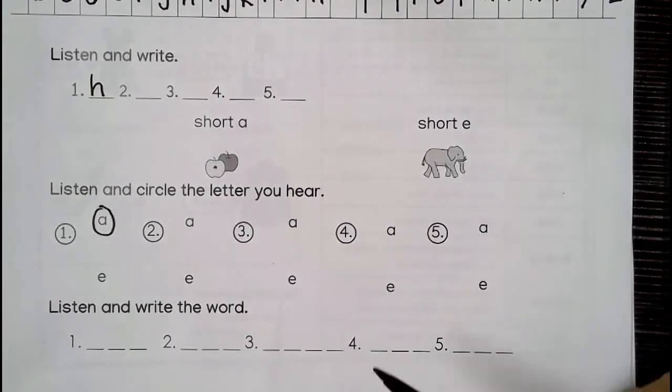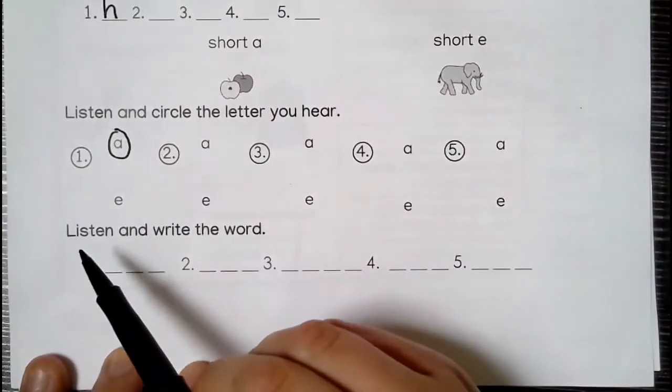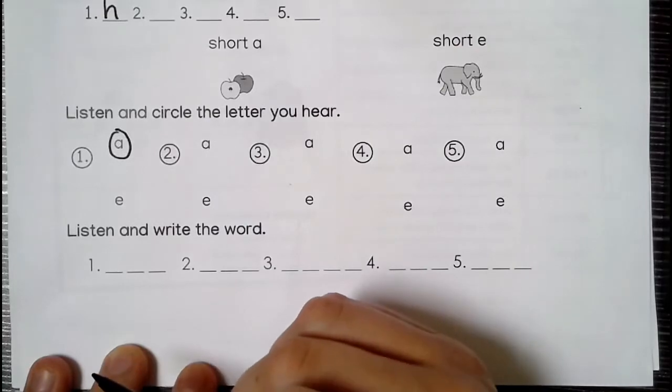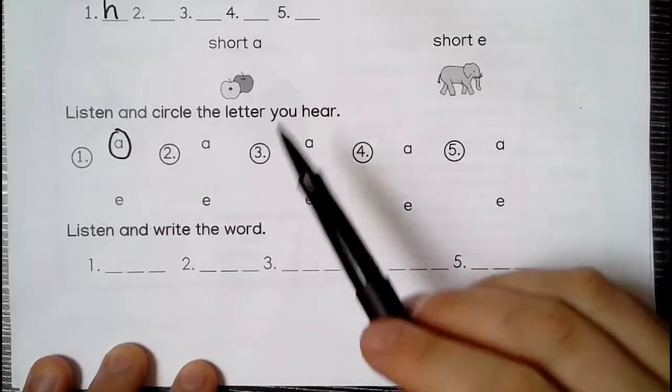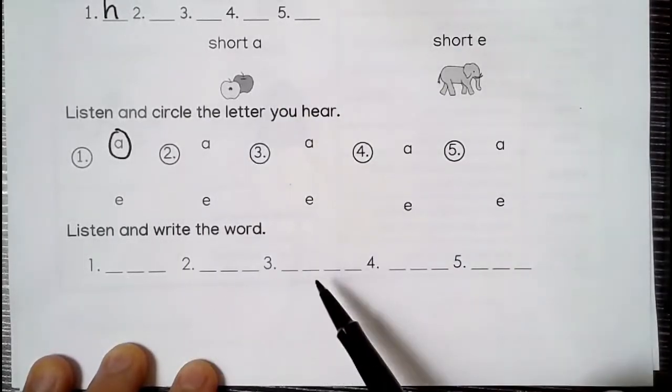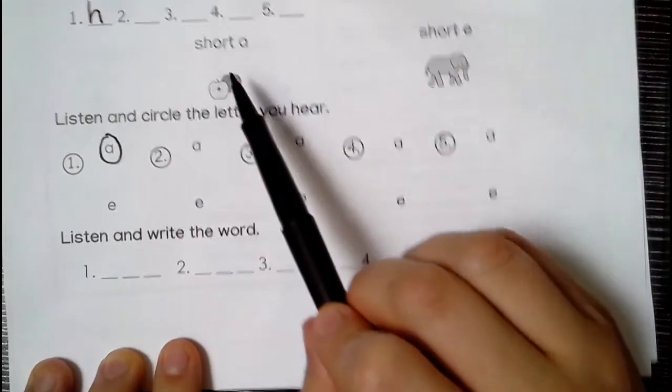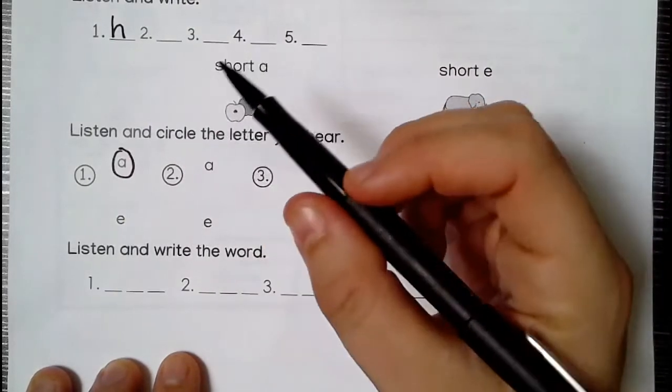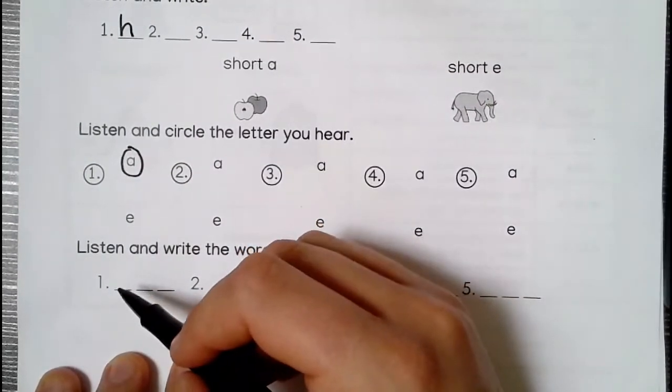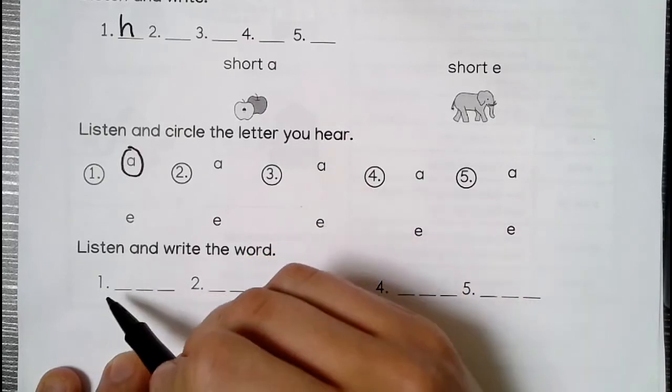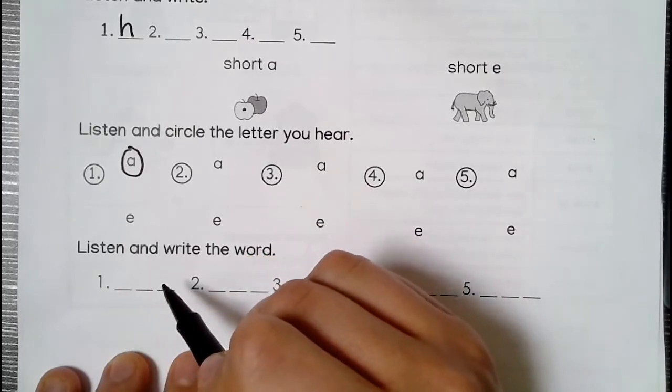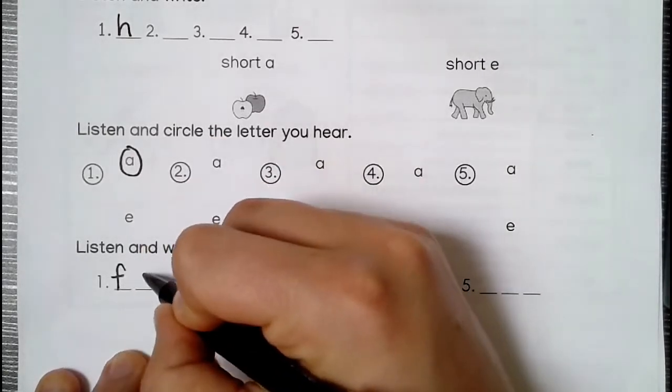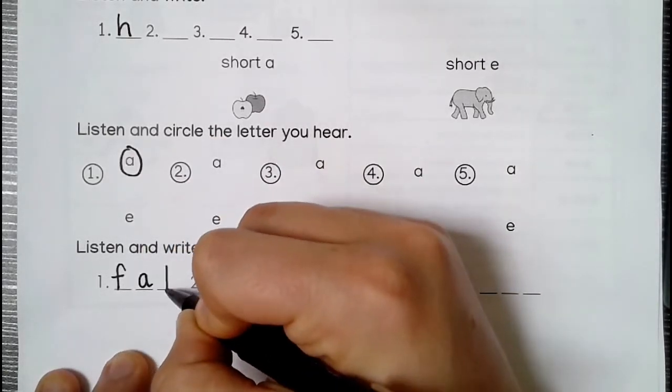Listen and write the word. I say a word. You listen and write it. The middle letter, or second letter, of each one is either A or E. No other vowel. Number one. Number one. Fat. F. A. T. Fat. F. A. T. Fat.